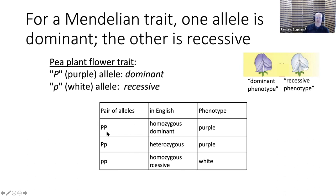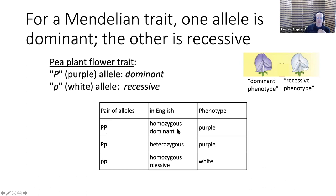The scientific terms for the three genotypes are: homozygous dominant (two dominant alleles), heterozygous (one dominant and one recessive), and homozygous recessive (two recessive alleles). That is a Mendelian trait.